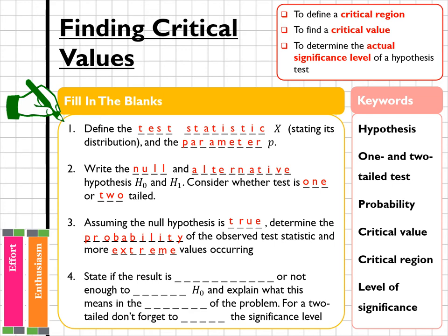Question four, state if the result is significant or not enough to reject H₀ and explain what this means in the context of the problem. For a two-tailed test don't forget you should have halved the significance level.